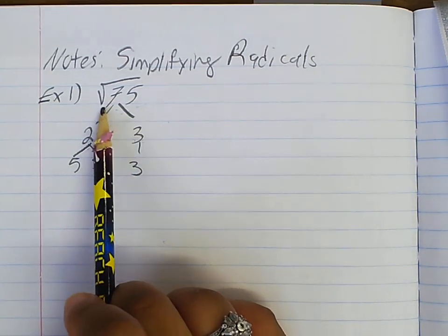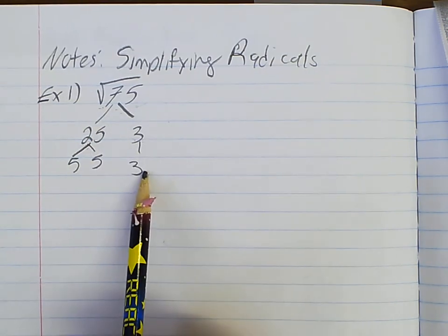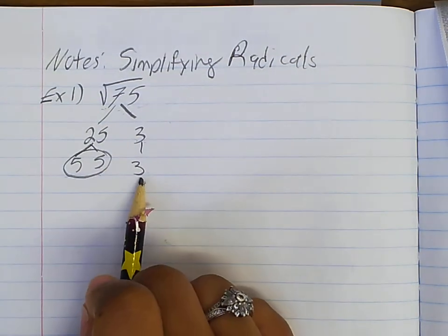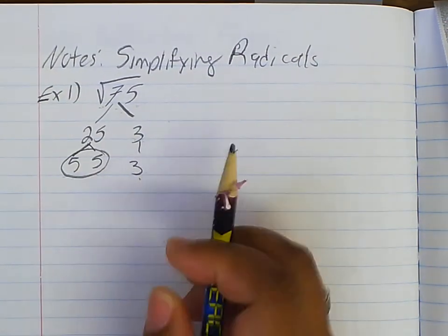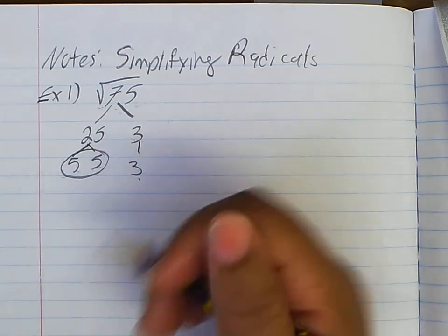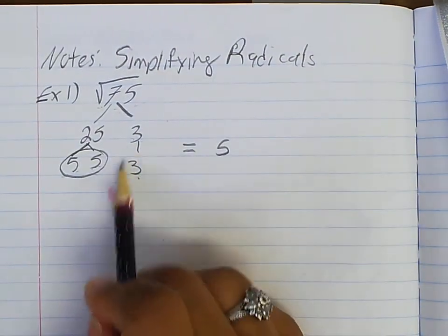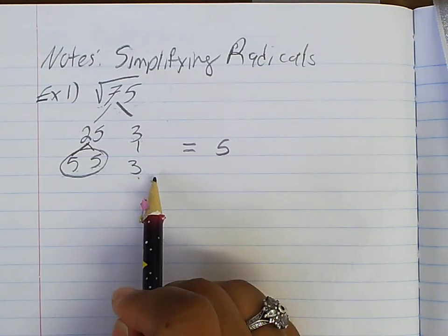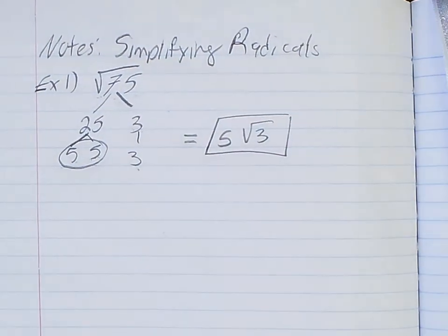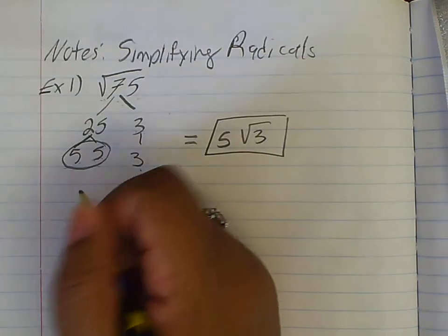I go ahead and break 25 down, which is 5 times 5, and bring down whatever else is up there so I don't forget it. Since this is a square root, I need two of something to pull out. Do I have two fives? Yes — I'm going to circle them. Do I have any more threes? No, so that stays inside the radical. I pull out one 5, and the 3 stays in the radical. Done.